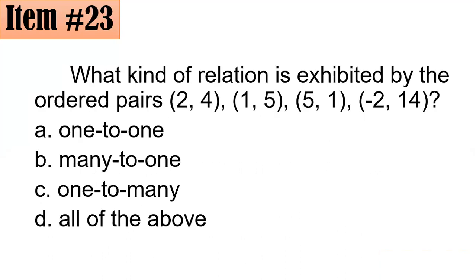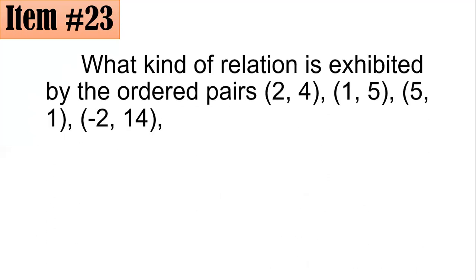Item 23. What kind of relation is exhibited by the ordered pairs (2, 4), (1, 5), (5, 1), (-2, 14)? Is it one-to-one, many-to-one, one-to-many, or all of the above? In this case we will go with what you could see.